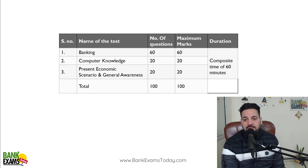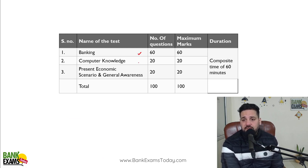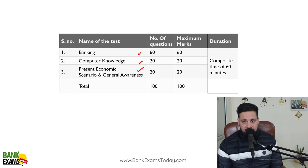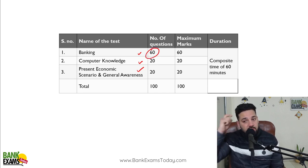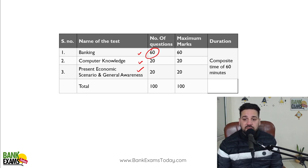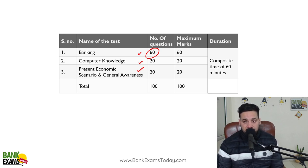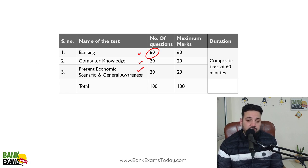This is the exam pattern: 3 subjects are there — banking, computer, and present economic scenario and general awareness. 60 questions are there in banking, 20 in computer, and 20 in present economic scenario and general awareness. So we are going to focus on banking for sure.